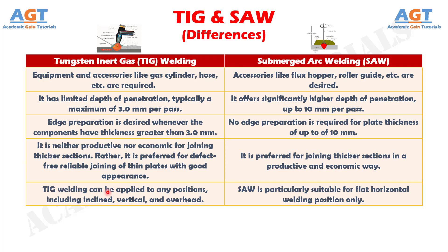Number 16: TIG welding can be applied to any positions, including inclined, vertical, and overhead, whereas submerged arc welding is particularly suitable for flat horizontal welding position only.